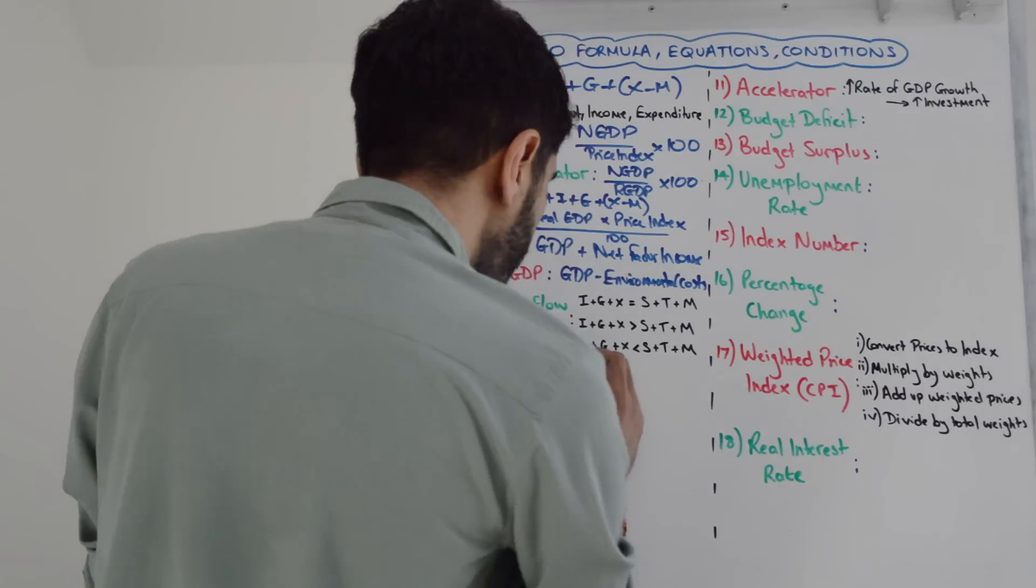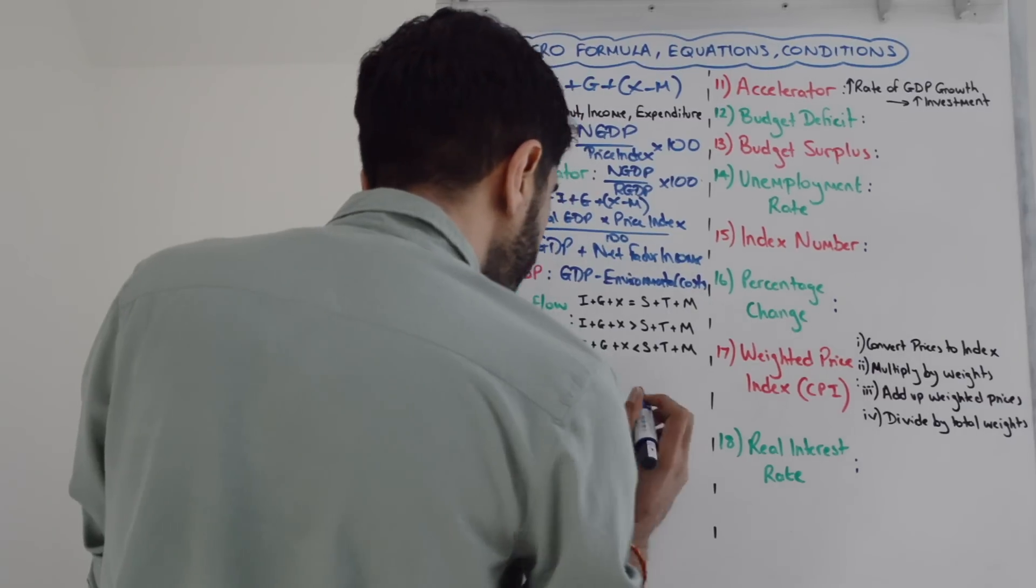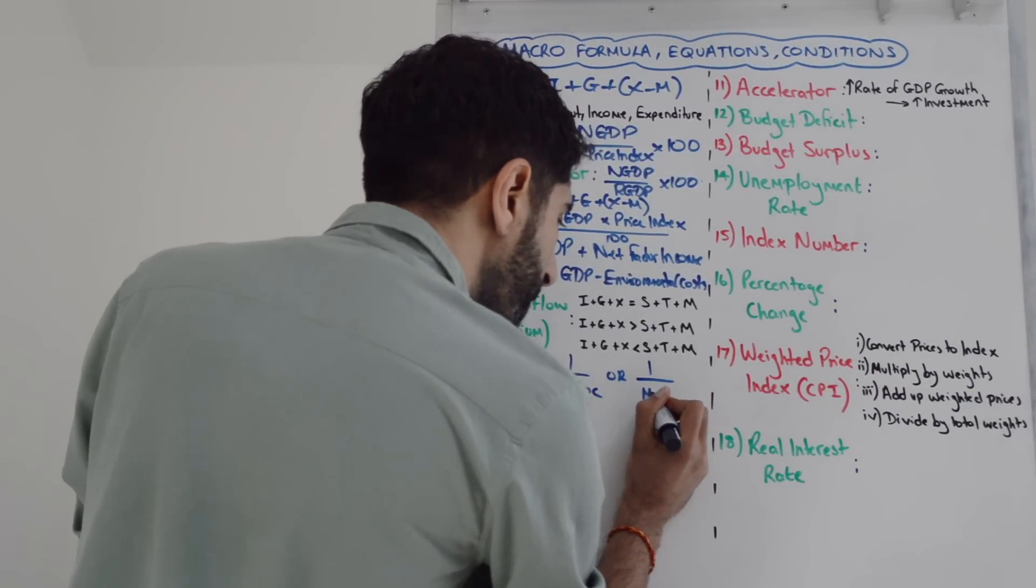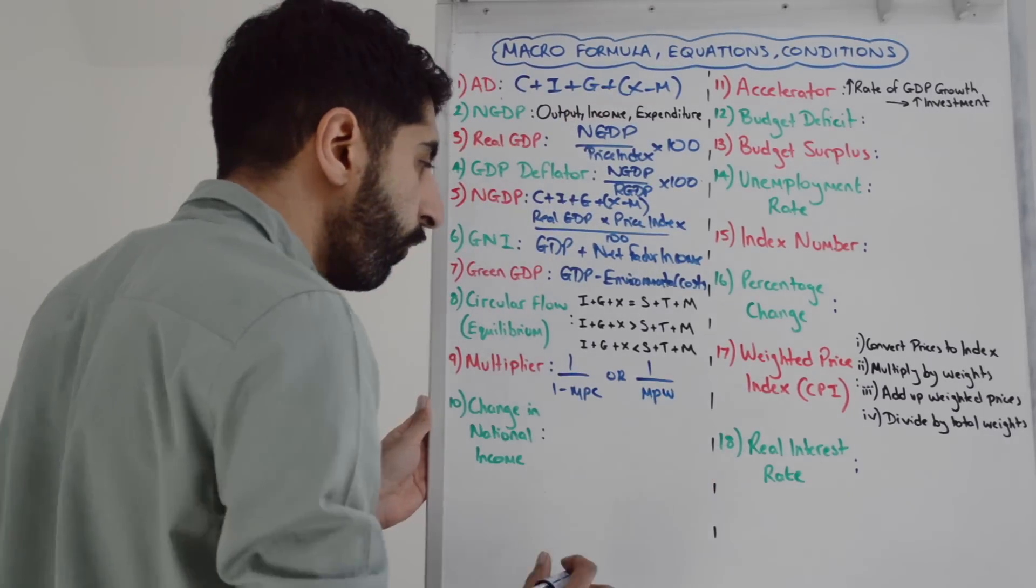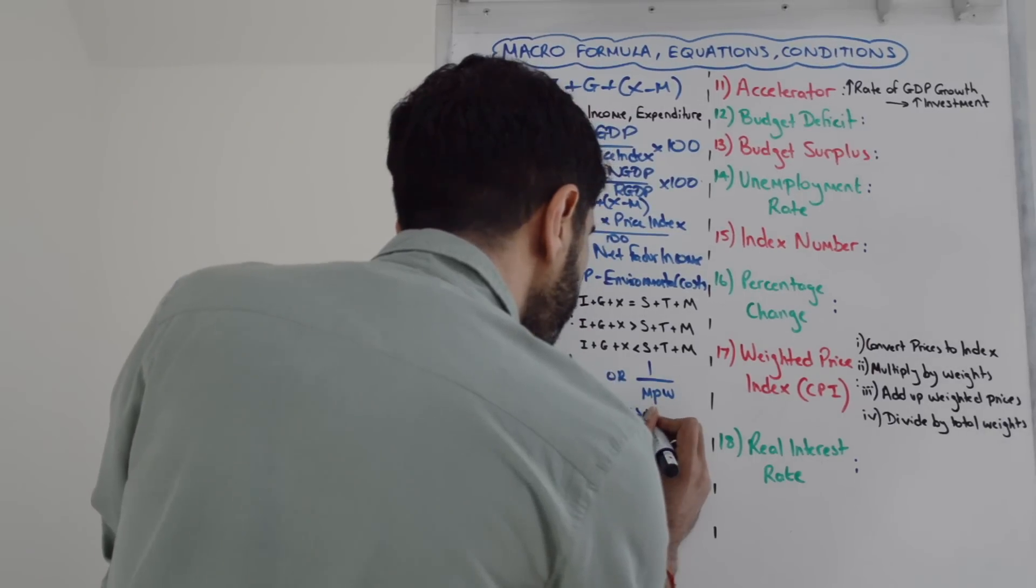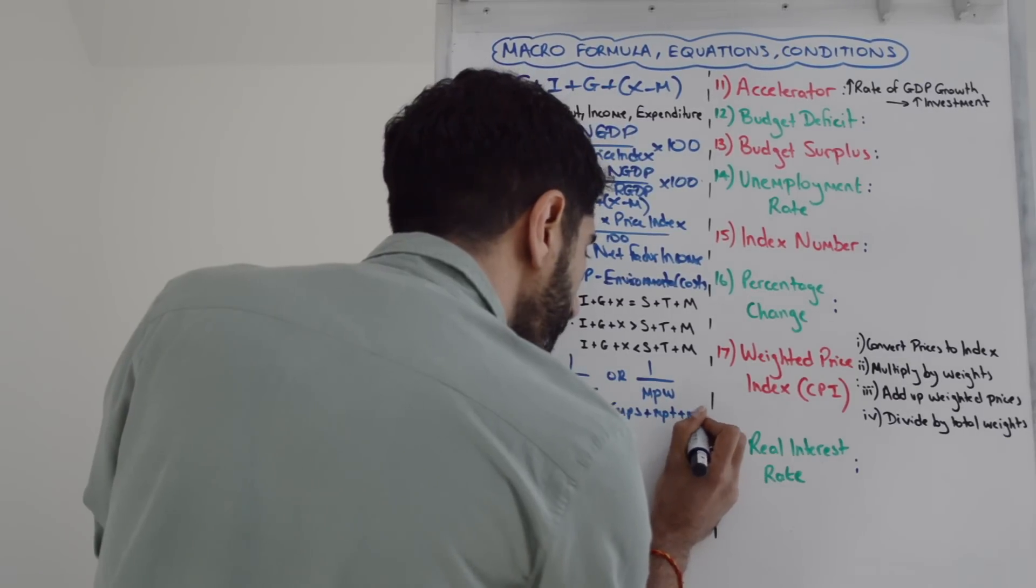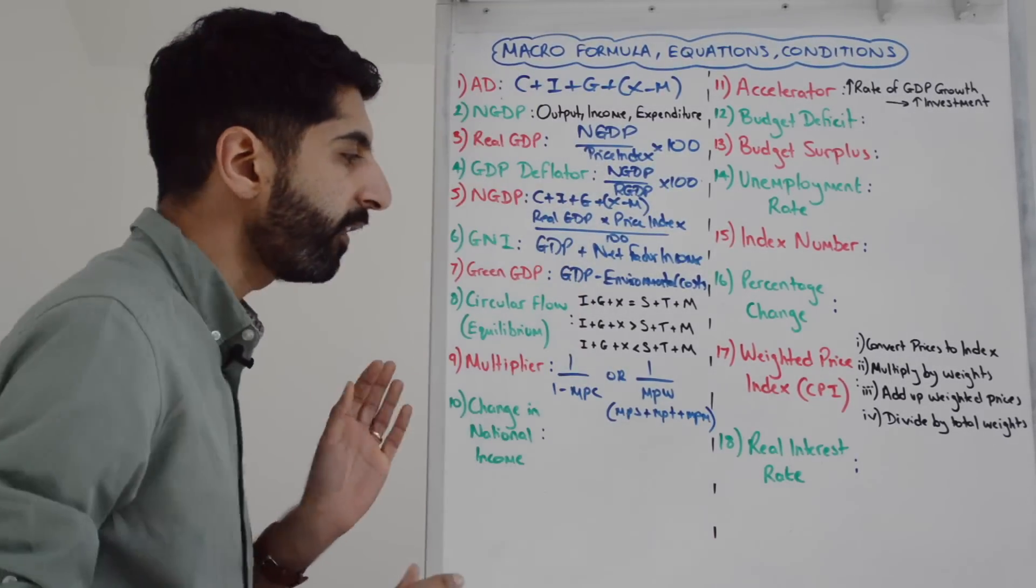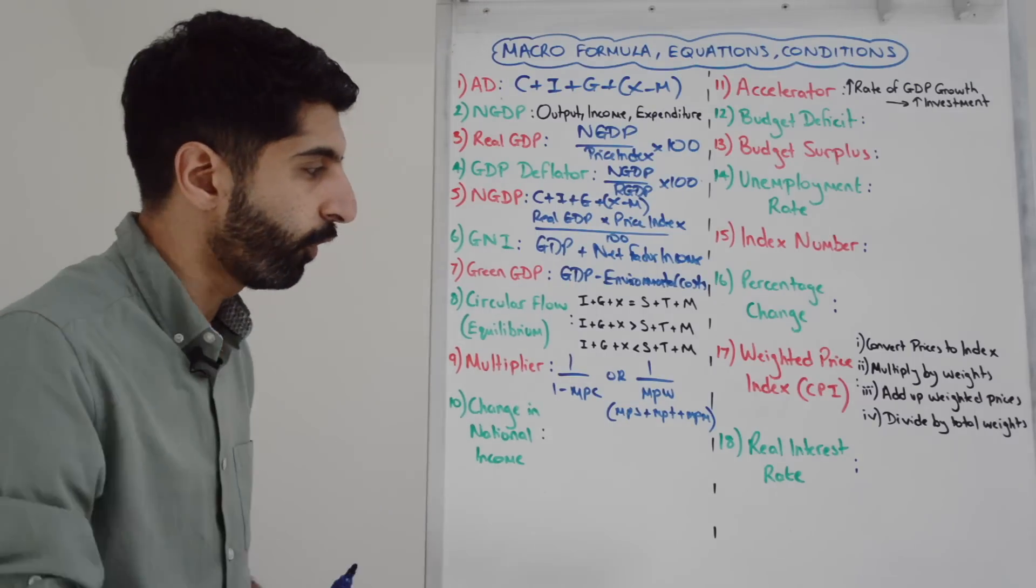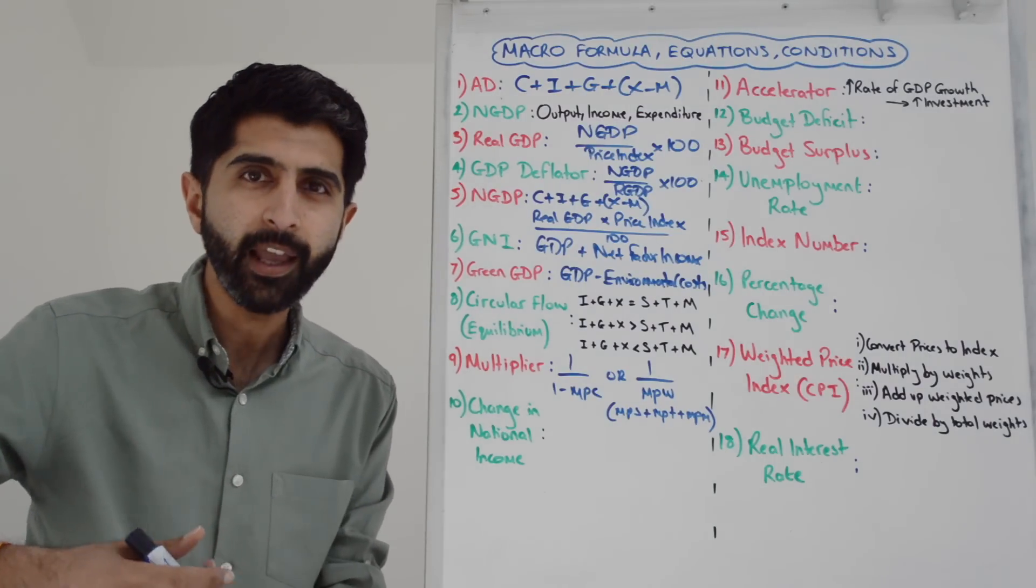The multiplier: two equations. One equation is 1 over 1 minus the marginal propensity to consume. Another way of getting it is 1 over the marginal propensity to withdraw. The MPW is made up of the marginal propensity to save plus the marginal propensity to tax plus the marginal propensity to import. Add those three leakages up, you get the marginal propensity to withdraw.